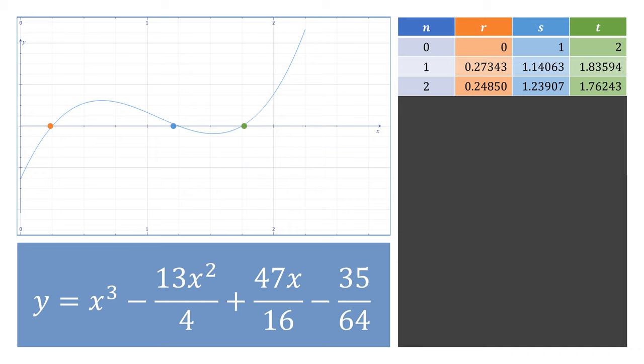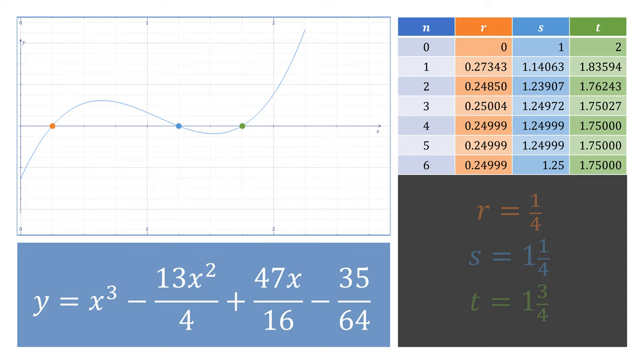With these new values, we can do another iteration. Then repeat the process. Now we've converged on values for r, s, and t.